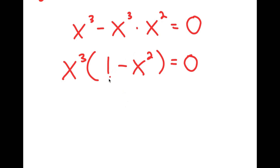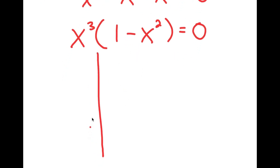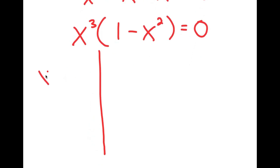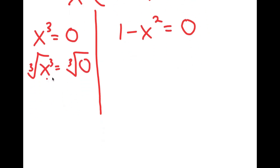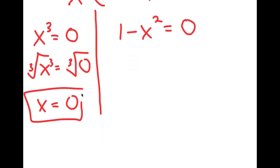This gives me two equations: x to the power of 3 equals 0, and 1 minus x squared equals 0. For x to the power of 3 equals 0, I take the cube root on both sides. The cube root of x to the power of 3 is x, and the cube root of 0 is 0. So, x equals 0 is one solution.